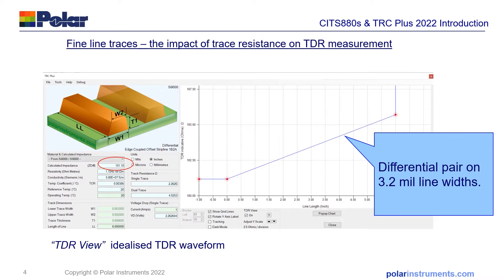The TDR view is an idealized waveform, so we've taken out all of the interconnect aberrations and any of the ordinary trace aberrations that you would see on a TDR waveform, just to show you the characteristic impedance and the rising effect on the TDR trace that the distributed resistance will cause.